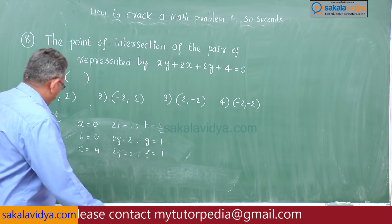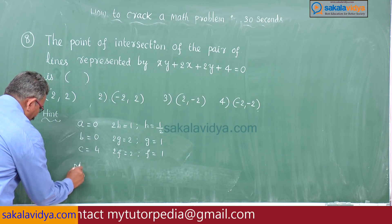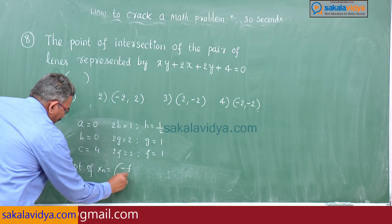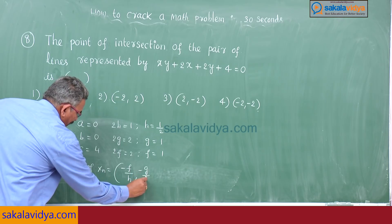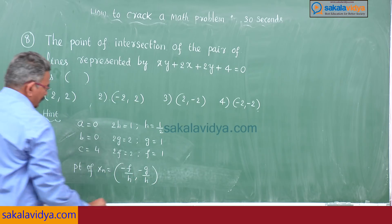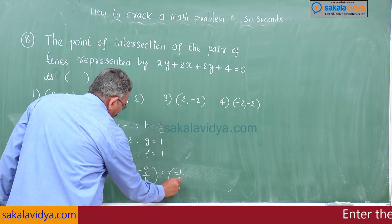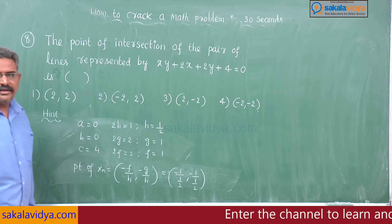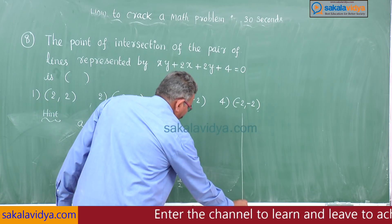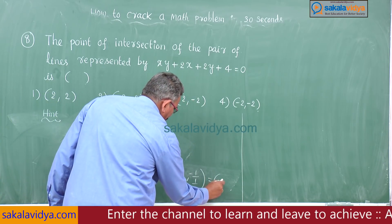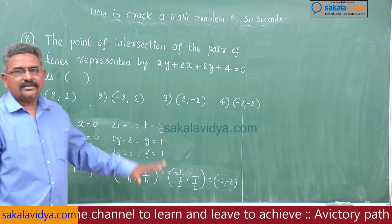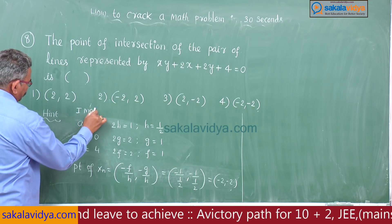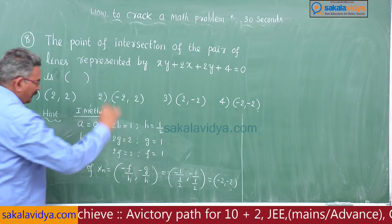If it is in the form 2hxy plus 2gx plus 2fy plus c equals 0, the point of intersection is minus f by h comma minus g by h. That means minus 1 by 1/2 and minus 1 by 1/2. The answer is minus 2 comma minus 2. This is the first method.